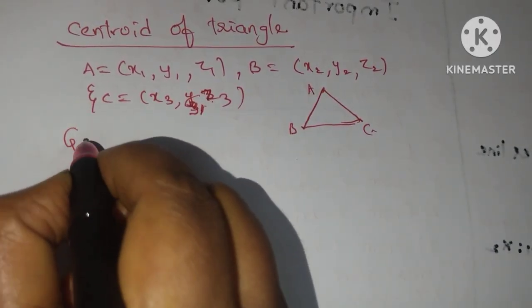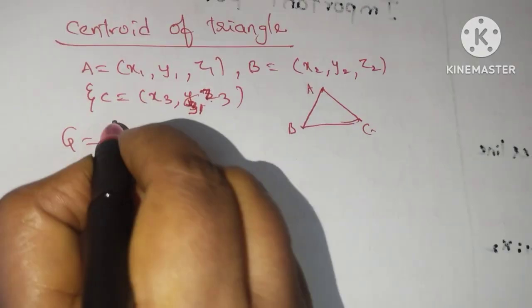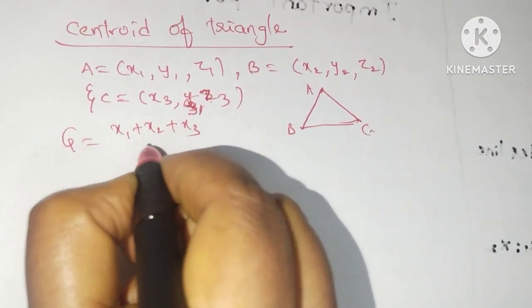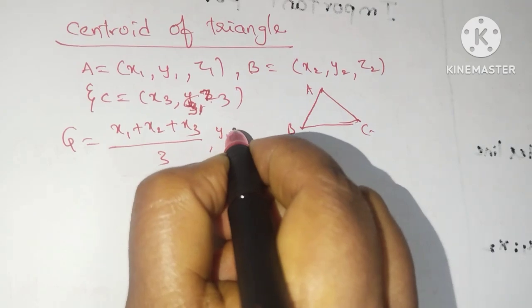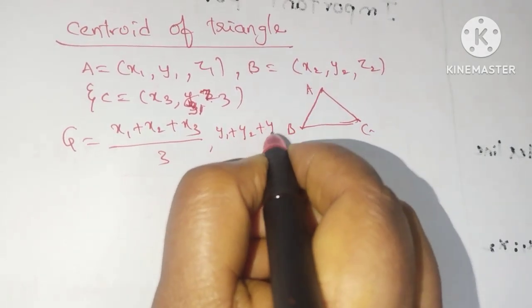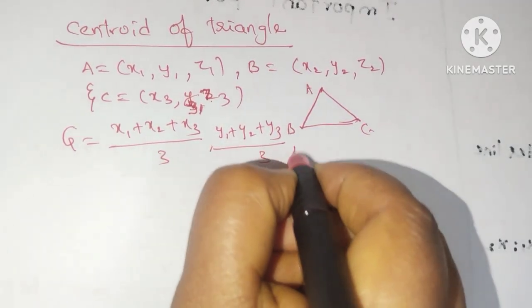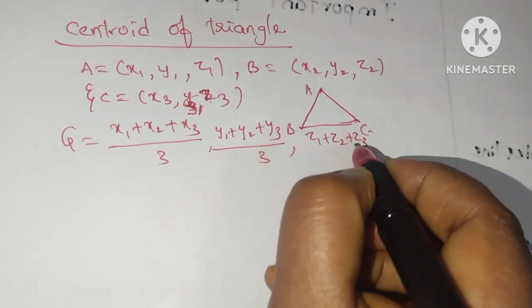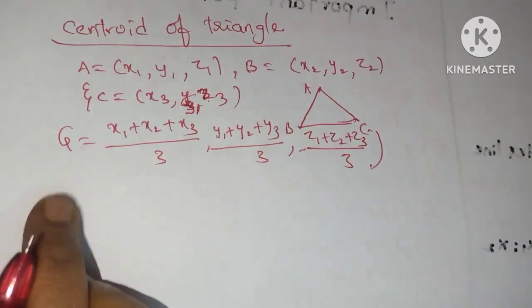The formula is represented by the letter G. X1 plus X2 plus X3 by 3, Y1 plus Y2 plus Y3 by 3, and Z1 plus Z2 plus Z3 by 3. It is centroid for triangle.